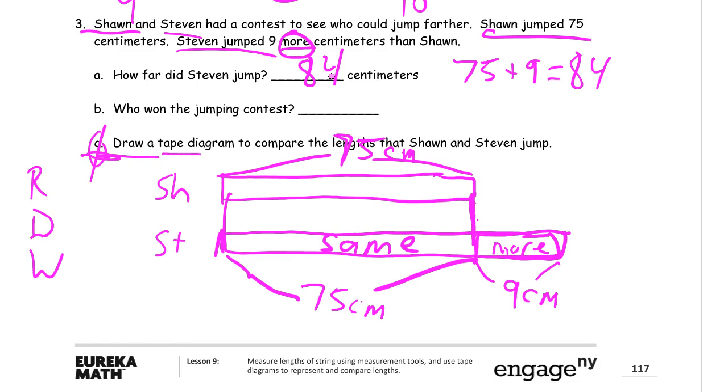Who won the jumping contest? Who jumped farther? Well, we knew that from the beginning because we knew Steven jumped more. And the contest was to see who could jump farther. So it's almost always farther. But you're going to read the question. So who won it? Who jumped farther? Steven. And notice that the answer to this is not a number. It says who. So the answer is a name. And so we know who won. We know how far Steven jumped. And we drew our tape diagram. We're done.